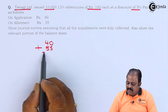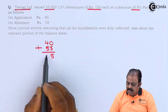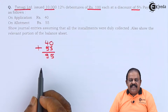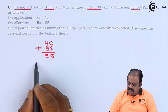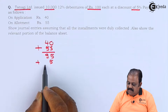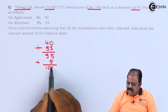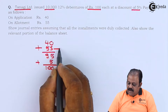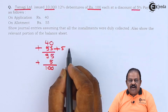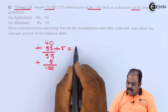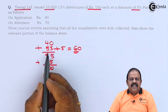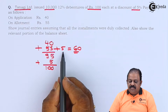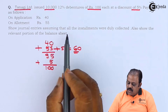On application rupees 40, on allotment rupees 55 — it comes to 95. The nominal value of the debenture is 100, so it is a 5% discount, that is 5 rupees. This 5 rupees will have to be adjusted at the time of allotment, so the allotment amount will be 60 rupees, of which 55 will be collected in cash and 5 rupees will be given as discount.